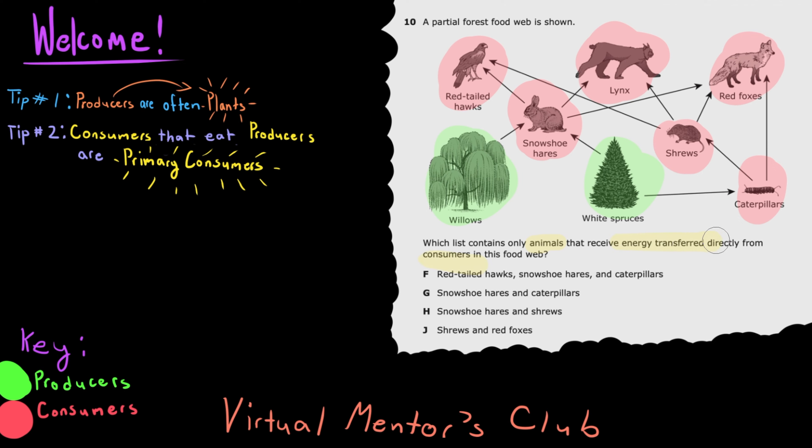So the phrase receive energy directly from consumers means eat consumers. So only animals that eat other consumers are eligible to be the correct answer.